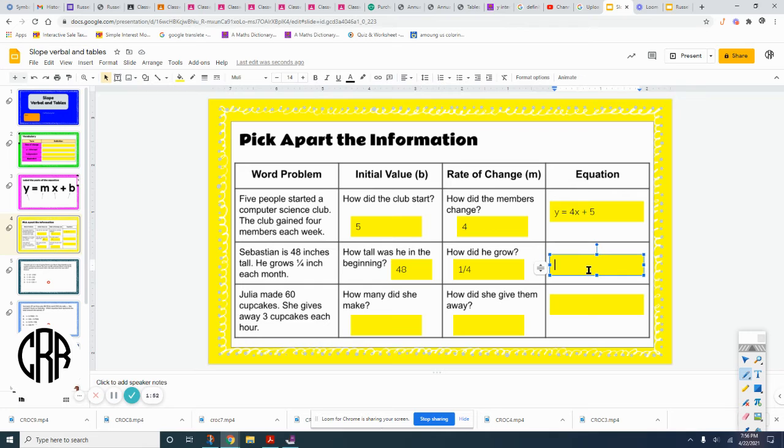And then how did he grow? He grew a quarter of an inch each month. So y equals a quarter of an inch each month plus the 48 inches that he already was. So if they wanted to measure how tall he was in six months, they would take a quarter of an inch, so .25, times the six months plus the 48 inches they started with when they did this, and that would give you his height.